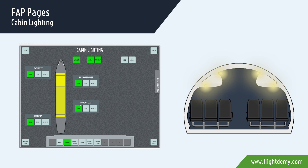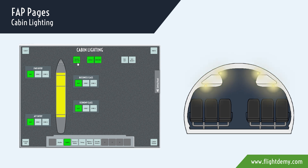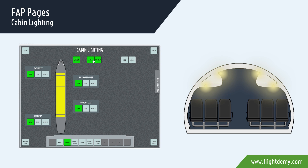Furthermore, there are five additional buttons at the top of the page. The main on/off button controls all the cabin lights — when pressed, it sets all the lights to off or bright. Next to this button, there are two buttons to control window lights and aisle lights. Keep in mind there is no additional indication for these lights.